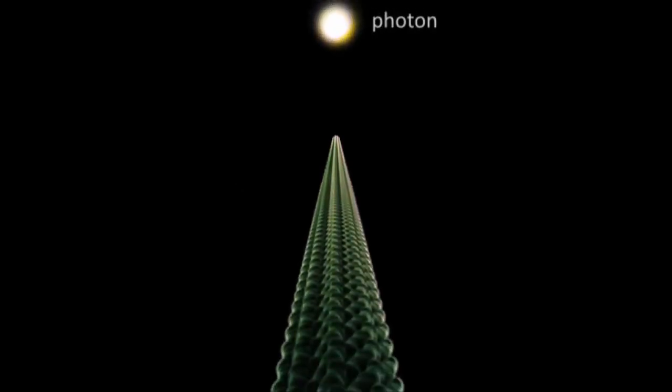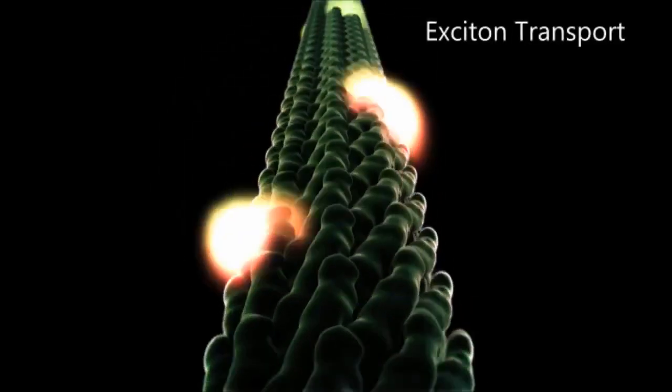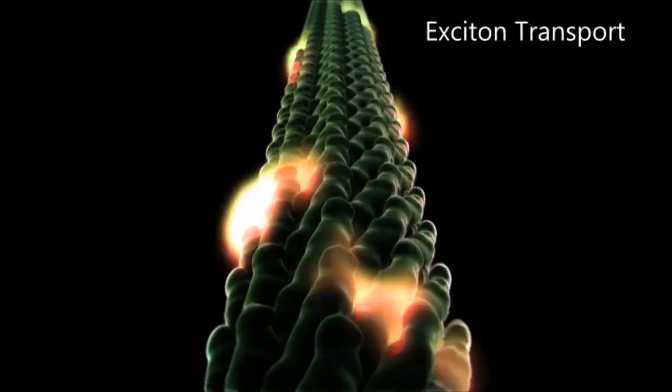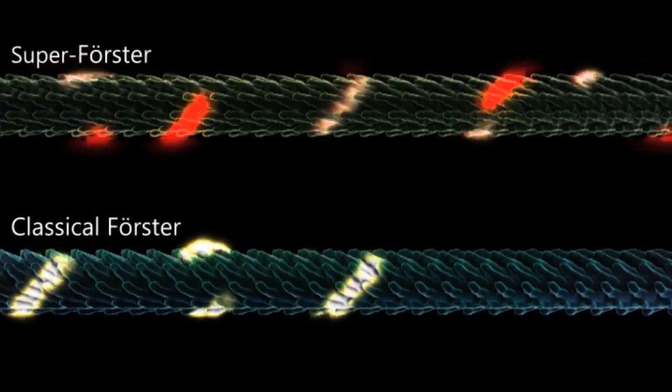Ultimately, what happens is that a photon strikes the surface of a virus. An exciton is created and is transported down the length of the virus. In the case of the quantum virus or the super-Förster virus, that exciton travels 68 percent farther with greater than two times faster transport kinetics.